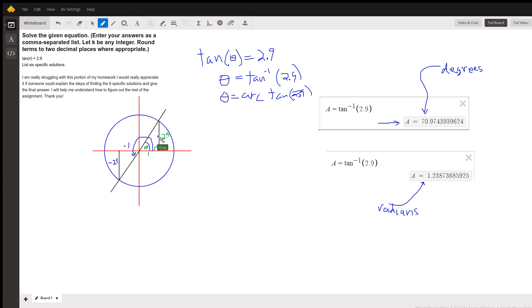The opposite side is 2.9. The radius is not 2.9. This height is 2.9 and this distance is 1, so the tangent of theta is 2.9 over 1.